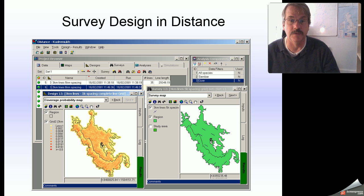Distance can also do survey design using a rudimentary geographic information system. Here are some examples of some survey designs that have been produced by program distance with associated measures of coverage probability that says how evenly does this particular survey design cover place sampling effort across your study area.